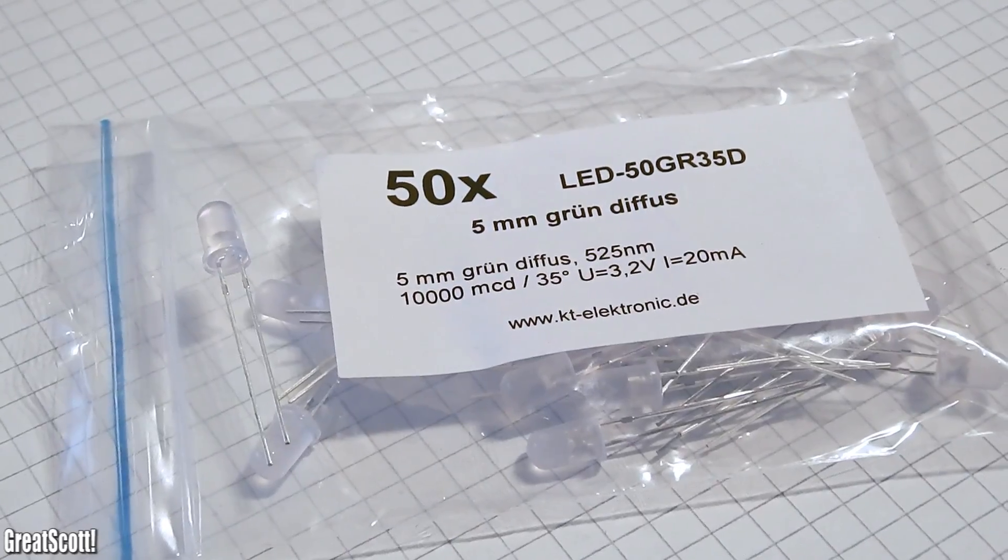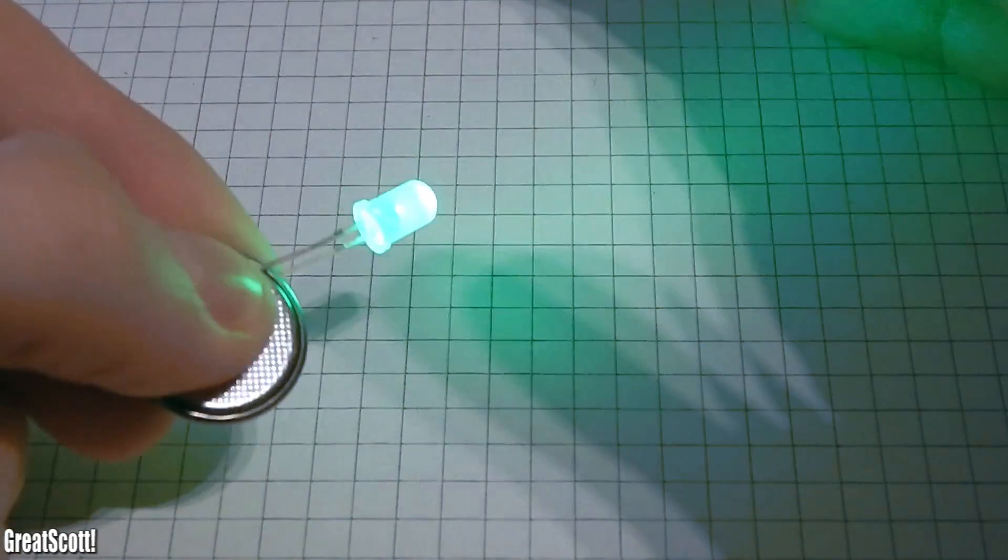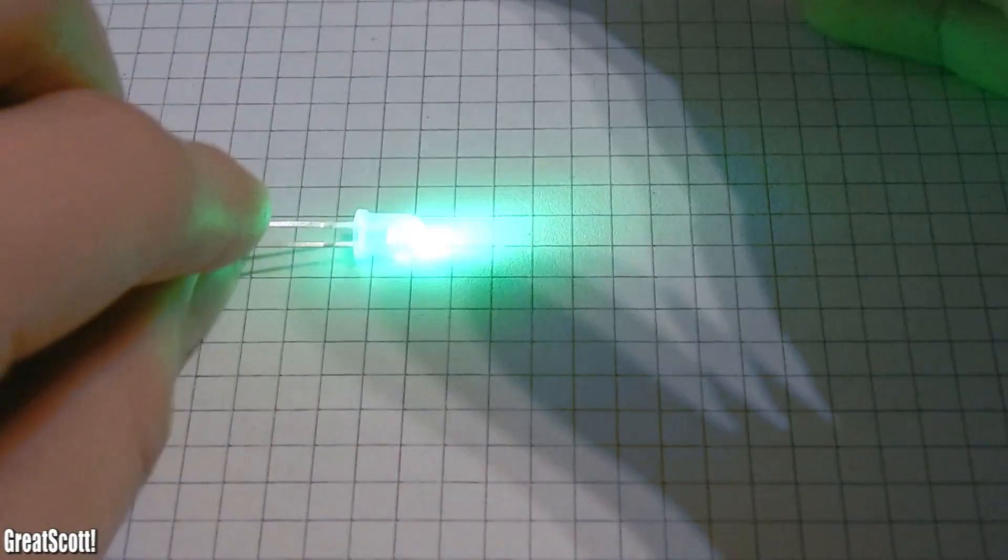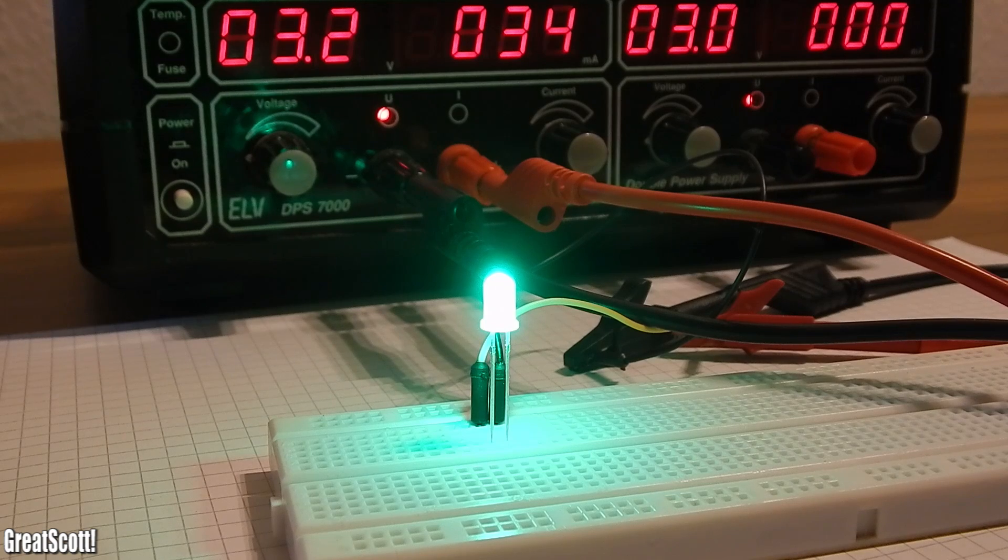I'm gonna use this basic green LED with a forward voltage of 3.2 volts as the test subject. Here I am powering it with my bench power supply at 3.2 volts. The secret of dimming is so simple.